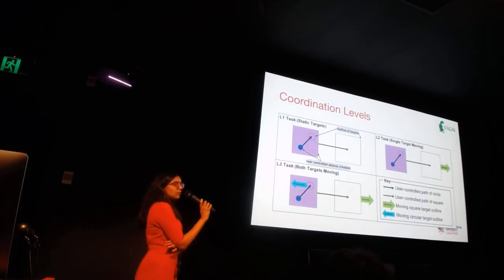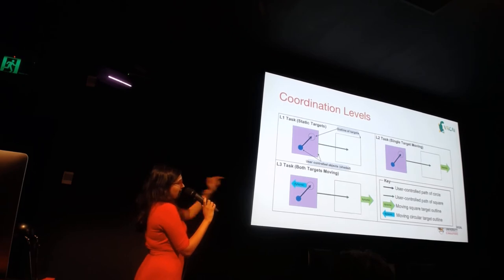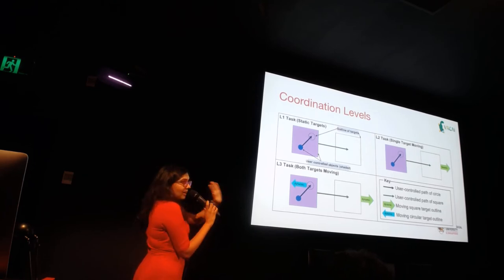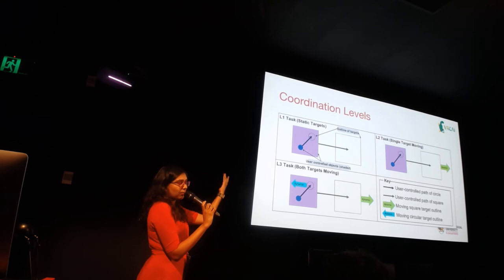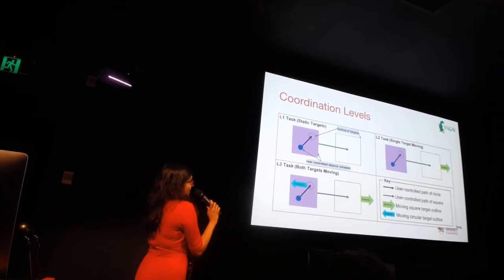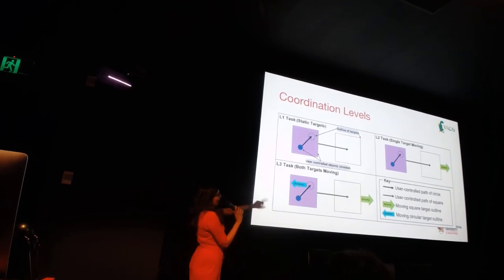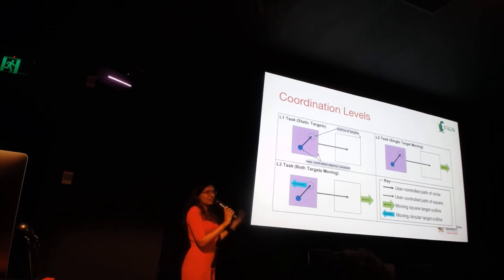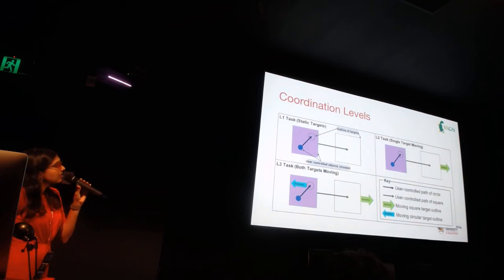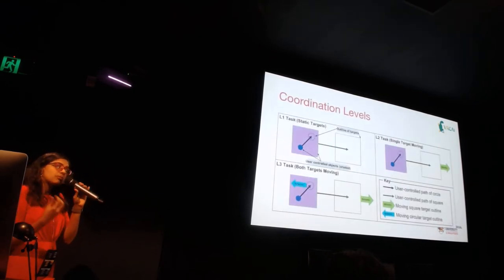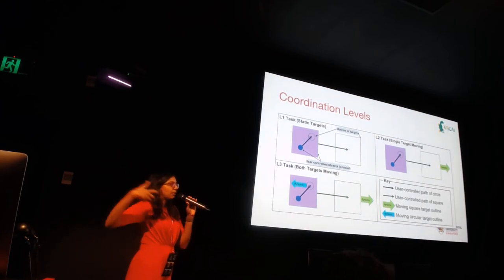The second level involved medium coordination, where the big square outline started moving and you had to fit the shaded square in and hold it for five seconds, requiring you to coordinate arm or head movement along with X finger movement. The third level involved very high coordination, where both outlines were moving and you had to match them both, really coordinating both modalities. Users performed all three levels of each interaction technique in sequence, and the orders were counterbalanced. We had 13 participants, five female.